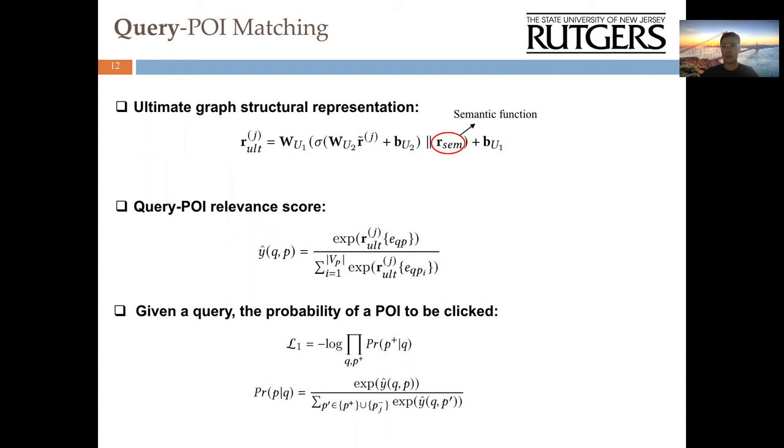Our model aims to minimize the error of estimated similarity score, where we also employ the negative sampling for training set augmentation such that for each query-POI pair, we randomly select four unclicked semantically similar POIs as negative samples and try to move the embeddings of queries far away from the ones of POIs.